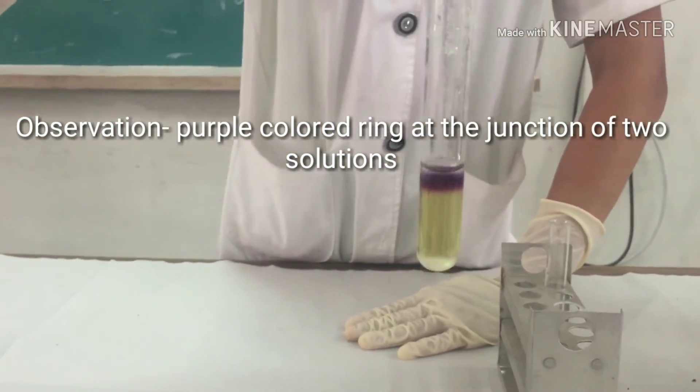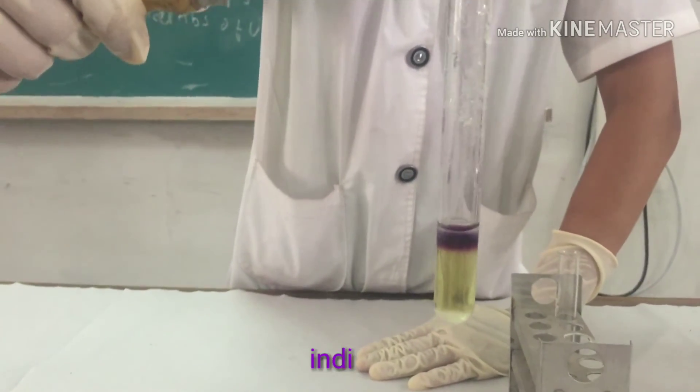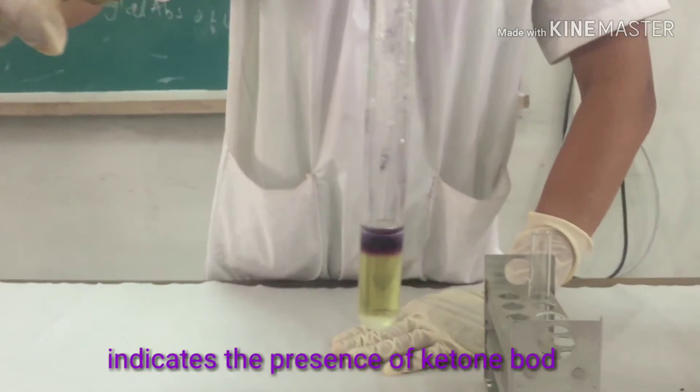We see there is a purple ring formation which indicates the positive Rothera's test.